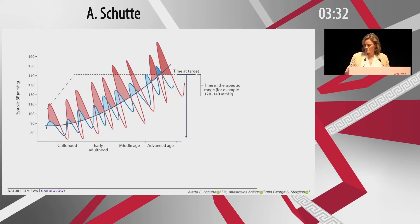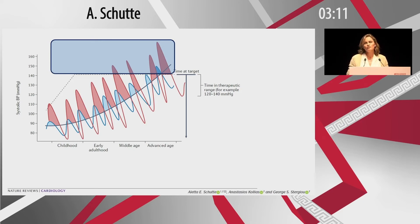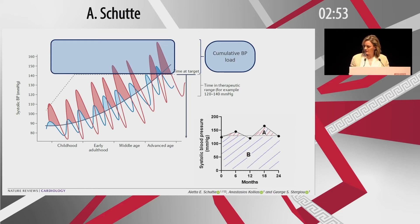Beyond time at target or time in therapeutic range, there is also the concept of blood pressure load — the cumulative amount of blood pressure readings above the target. A hypothetical example shows two patients with the same average blood pressure over their life course, but because of the huge variation in one patient, they have a much greater blood pressure load, which is more strongly associated with cardiovascular outcomes. This represents the cumulative load and can be calculated as the proportion of time spent above target.